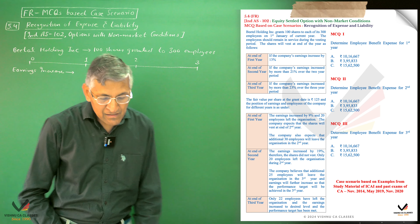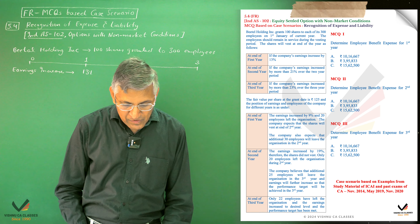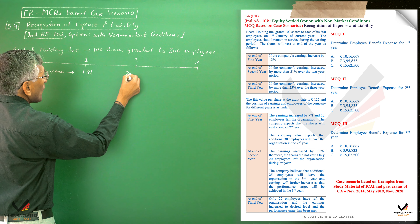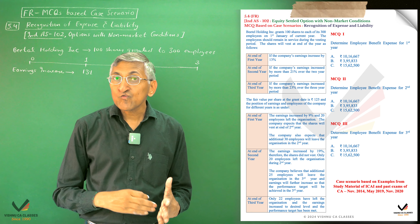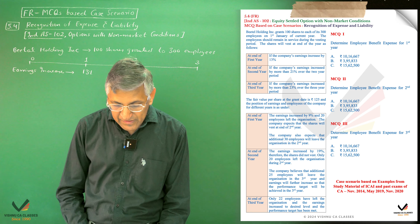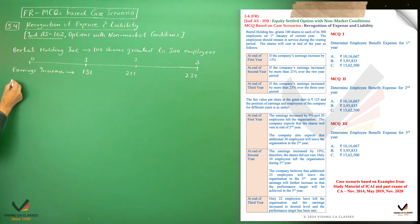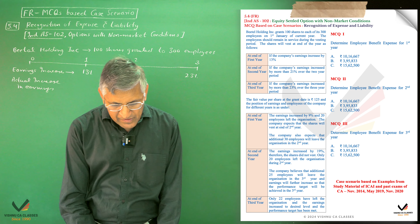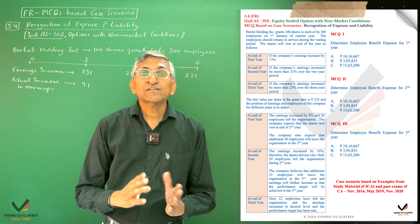To summarize the conditions: in Year 1, if earnings increase by 30%, shares vest after 1 year. If earnings increase by 21% over two years, shares vest at end of Year 2. If earnings increase by 23% over three years, shares vest at end of Year 3. In Year 1, actual earnings increased by only 9%, so shares are expected to vest in Year 2.